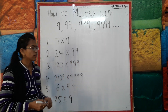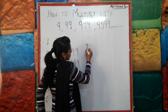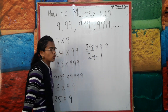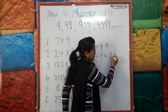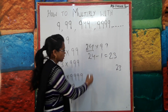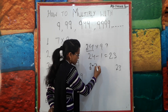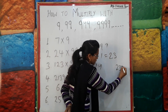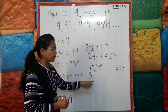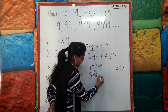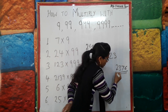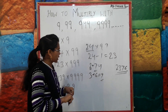Now let us go to the second question: how do we multiply a double digit by double 9? For example, 24 × 99. Do 24 minus 1 = 23. The first two digits of the answer are 23. Now take the first digit of 23, which is 2. Add 7 to get 9 — so the third digit is 7. Then take the next digit 3, add 6 to get 9 — so the last digit is 6. The final answer is 2376.